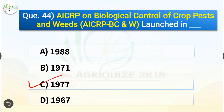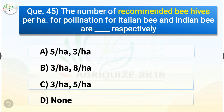Question number forty-five: The number of recommended bee hives per hectare for pollination for Italian bee and Indian bee respectively are which of the following? The correct answer is option C — 3 per hectare and 5 per hectare. The number of recommended bee hives per hectare for pollination for Italian bee and Indian bee are 3 per hectare and 5 per hectare respectively.